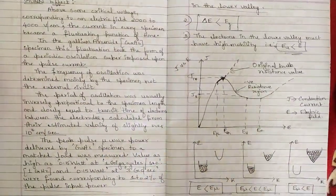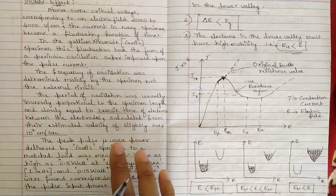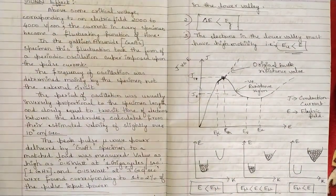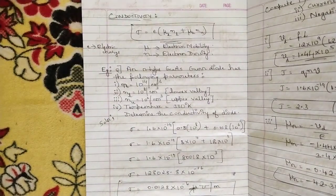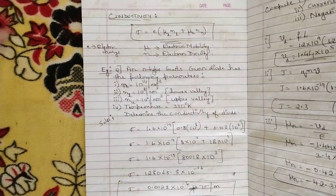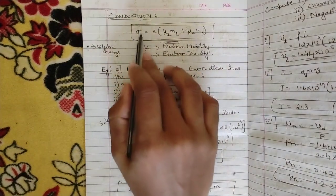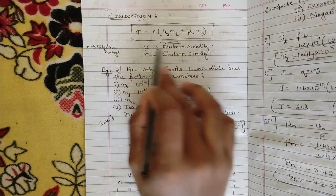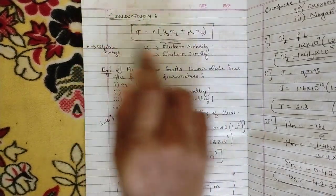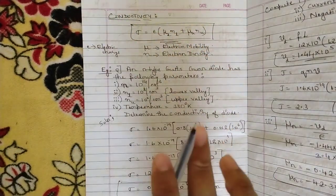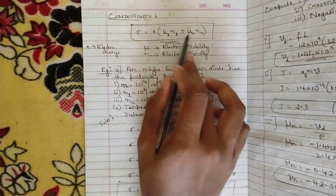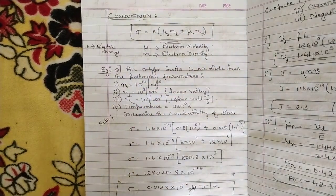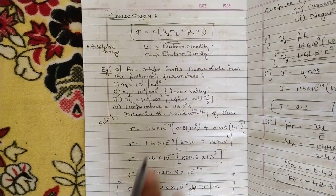That was a brief overview of the gun effect. To thoroughly understand the gun effect you should understand what the gun diode is. Now let us look at conductivity. The conductivity formula is: σ (sigma) = e(μₗnₗ + μᵤnᵤ), where μ is electron mobility, n is electron density, and e is the electric charge. Please note this formula — it is very important.